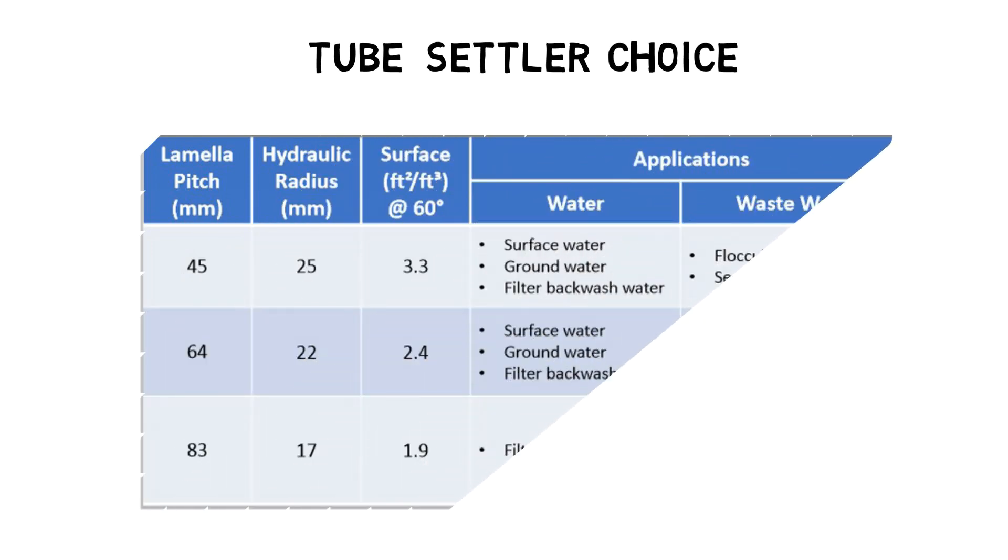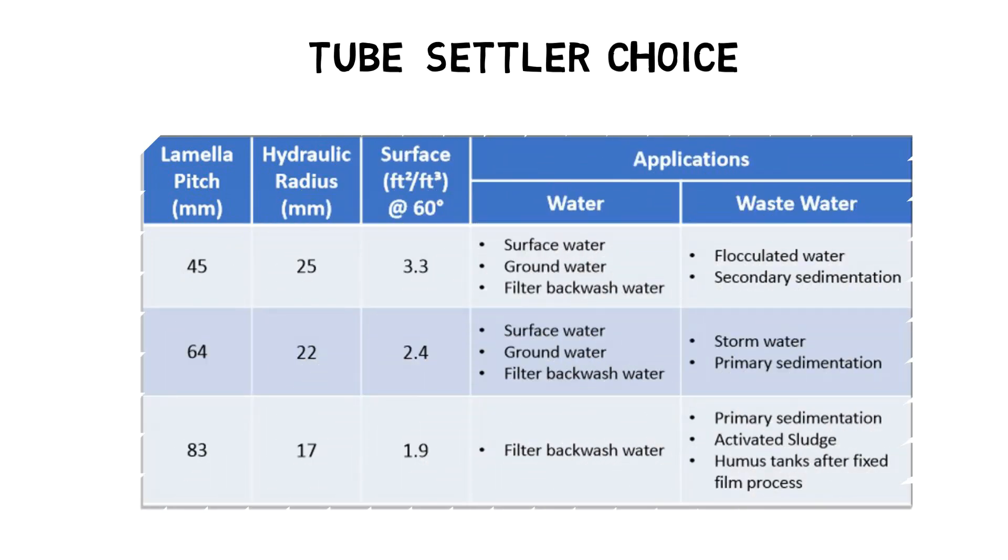Knowing the settling velocity, we can now determine the total required amount of tube settlers. AET LLC offers different types of tube settlers, but for drinking water applications, the LS50 design is usually used.